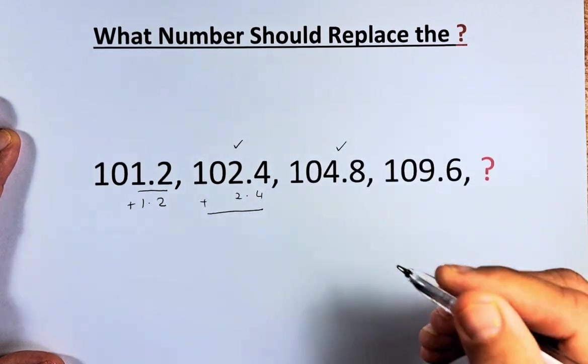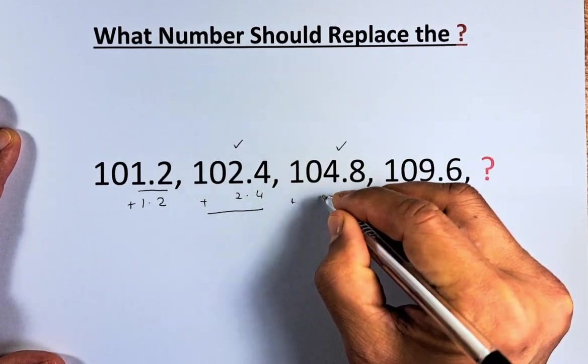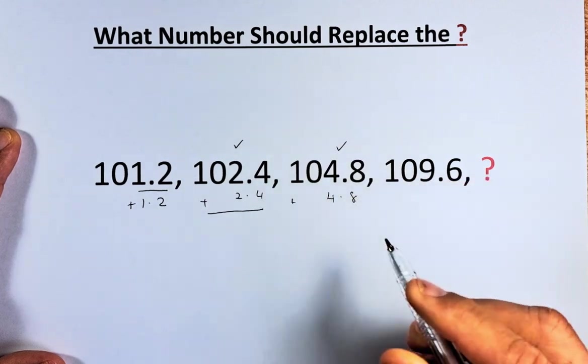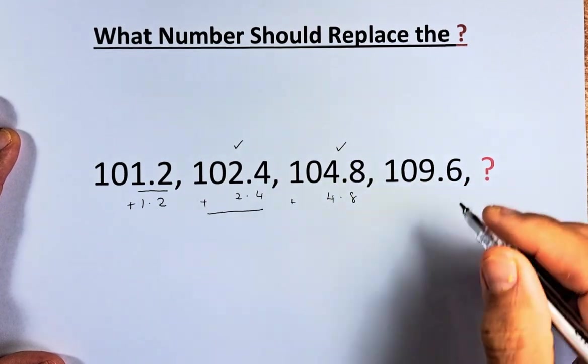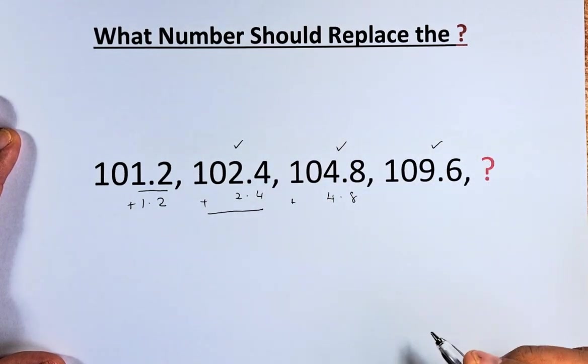And the same thing will continue. You're going to add 4.8, the last two digits. So 104.8 plus 4.8 will give you 109.6.